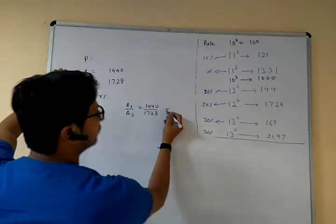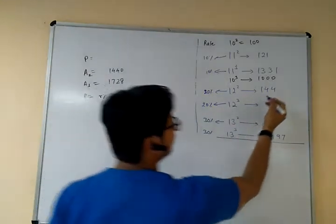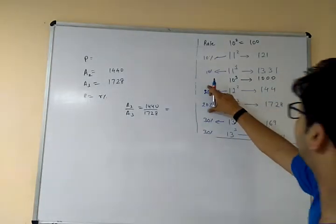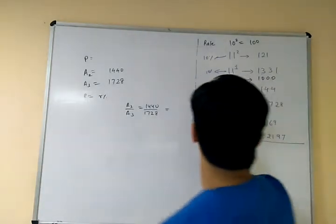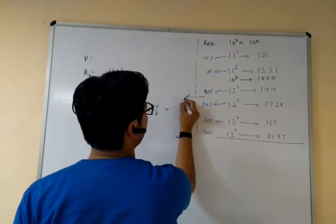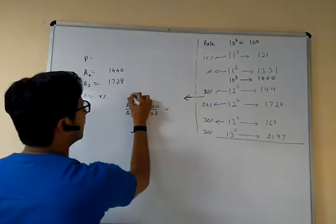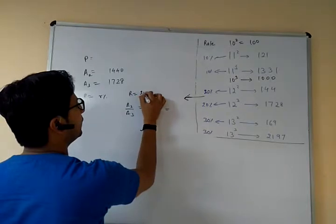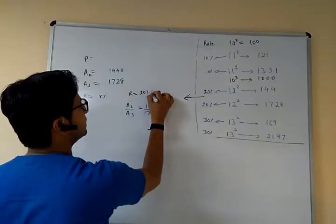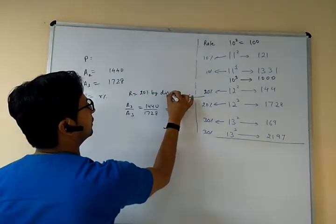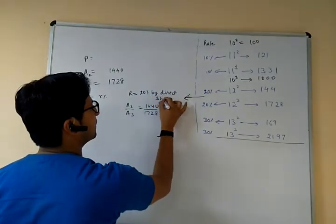Dividing A3 by A2, we get 1728 divided by 1440, which gives 20 percent. So R is equal to 20% by direct shortcut.